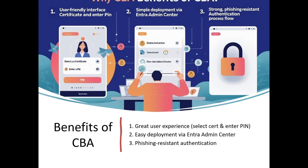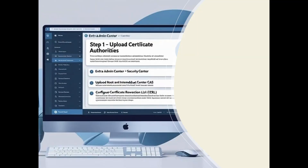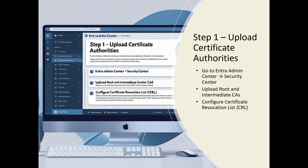Now let's go through the configuration walkthrough overview. To configure certificate-based authentication in Microsoft Entra, there are a few steps: first, upload the Certificate Authorities; then enable CBA in the admin center; then configure authentication binding; after that, create custom rules and username mapping; and finally, test the configuration.